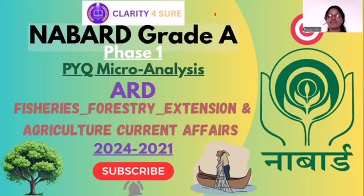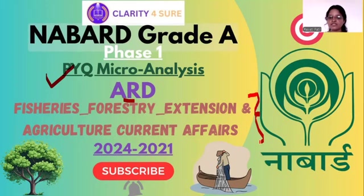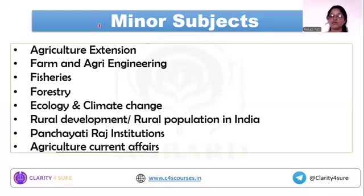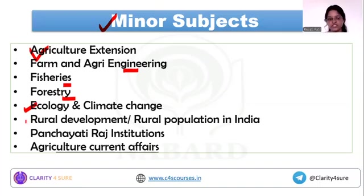Hello everyone. Welcome to the last PYQ microanalysis video for NABARD Credit Phase 1 for ARD, Agriculture and Rural Development. Today we are going to discuss some of the minor topics for the microanalysis. These minor subjects are Agriculture Extension, Agri-Engineering, Fisheries, Forestry, Ecology and Climate Change, Rural Development, Rural Population in India, Panchayati Raj Institutions, and some Agricultural Current Affairs.